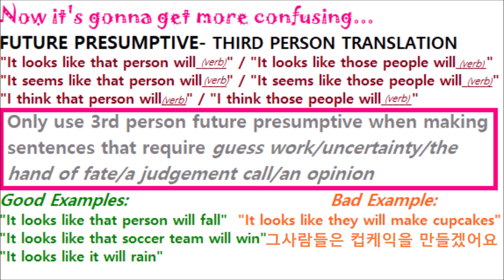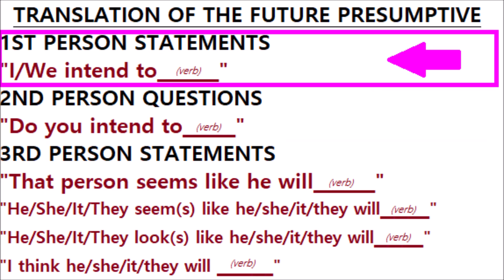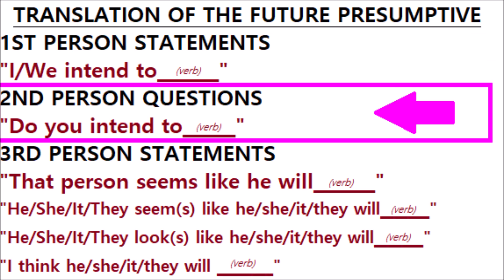This isn't something I can describe in a clear, cut-and-dry way — you learn with experience what form of future tense is most appropriate. You might even consider not using future presumptive for third-person sentences at all, just to be on the safe side. To sum up: third-person sentences mean 'that person seems like he will blank,' first-person sentences mean 'I intend to blank' or 'we intend to blank,' and second-person questions mean 'do you intend to blank?'